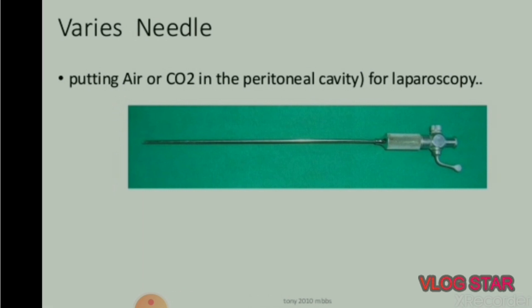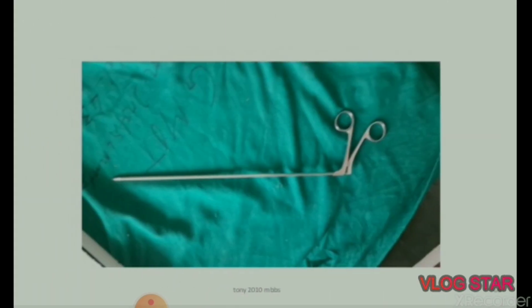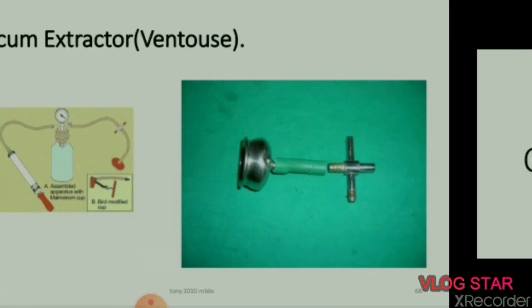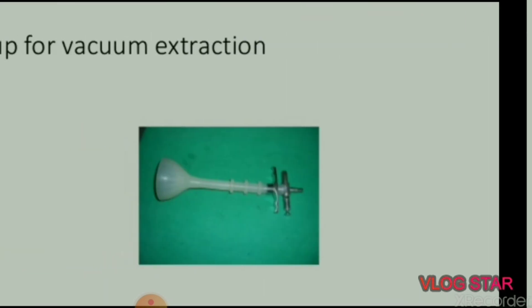Next is the Veress needle, used for putting air or carbon dioxide in the peritoneal cavity for laparoscopy. Next instruments for operative vaginal delivery.